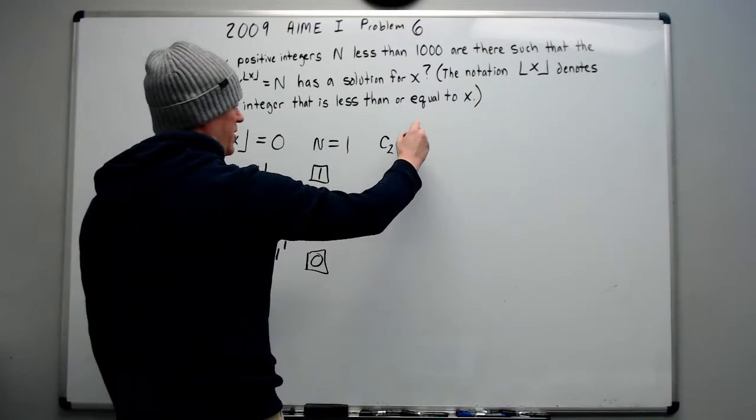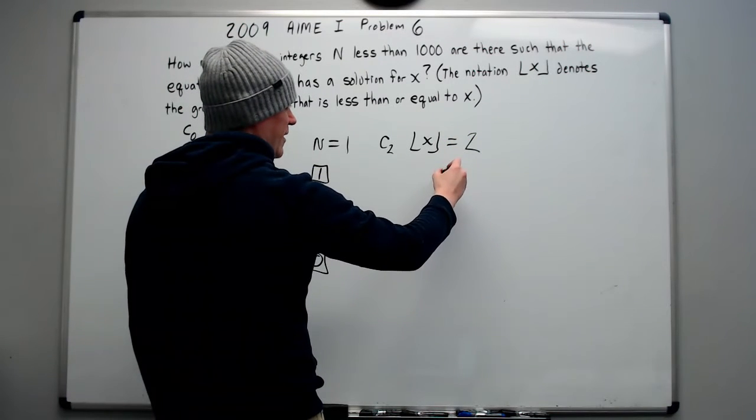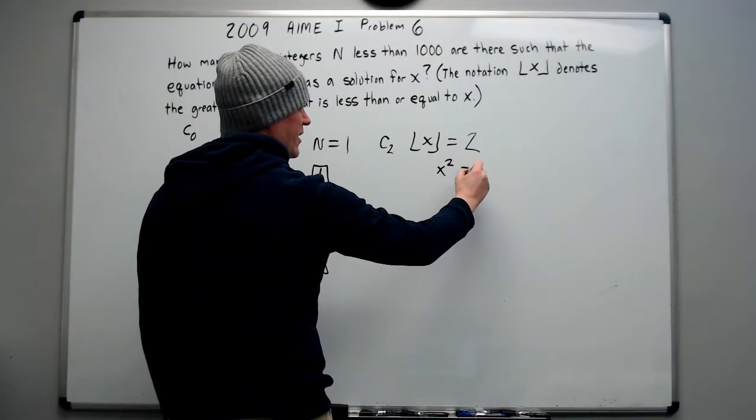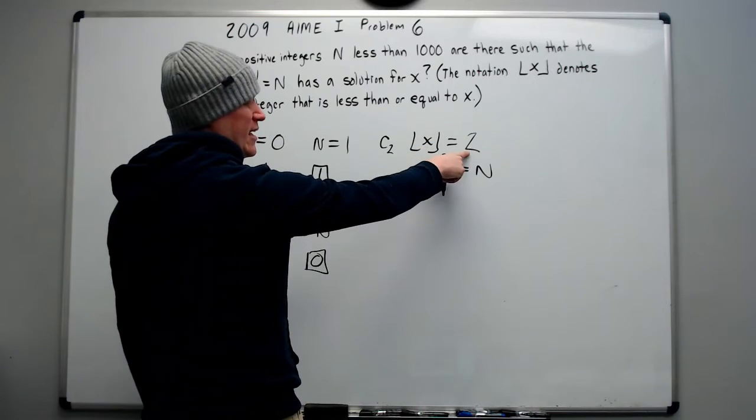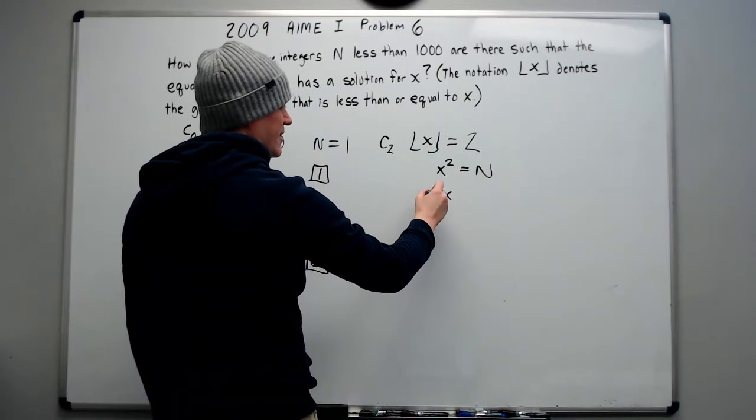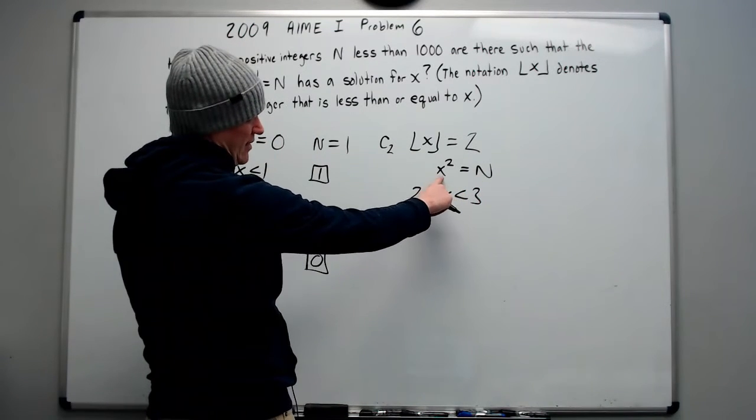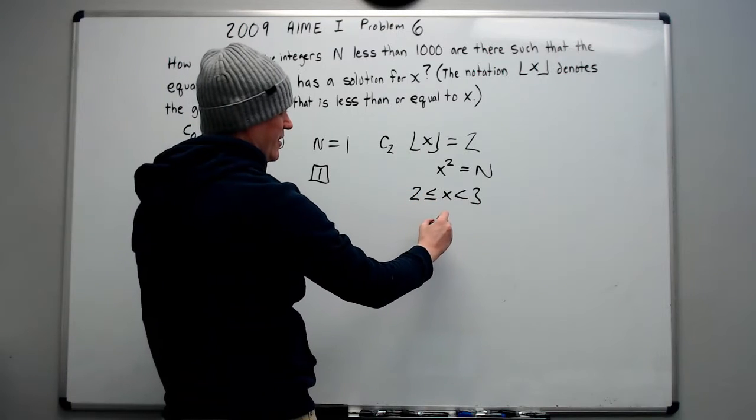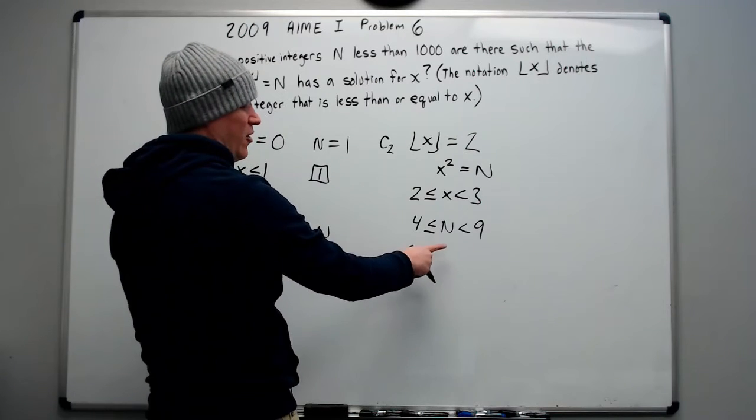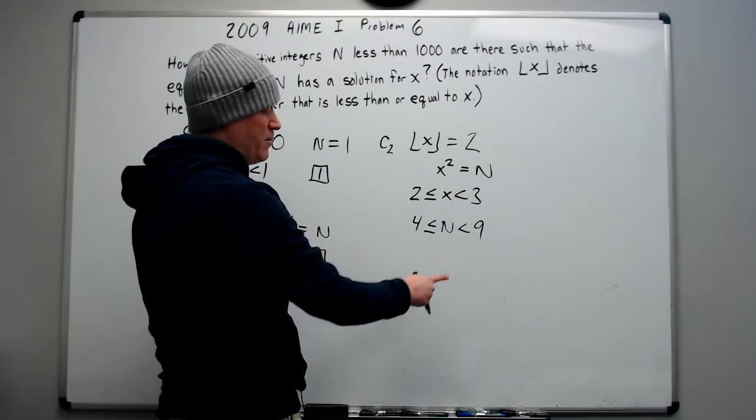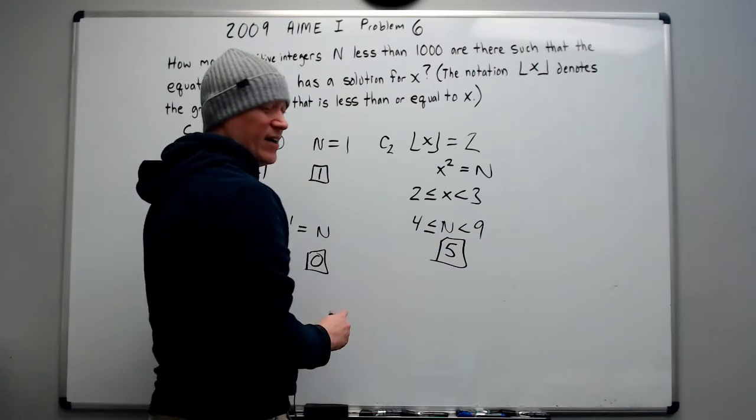This means x is greater than or equal to 1 and less than 2. Since it can't equal 2, we know we're going to get x to the first equals n. And because of that, I can only get n to come out to be 1. And so really the only value that works is 1 to the first power. And we already have that value covered in case 0. So we're not going to get any new values of n from this case. Then we're going to go to case 2, which is going to be when the greatest integer is equal to 2.